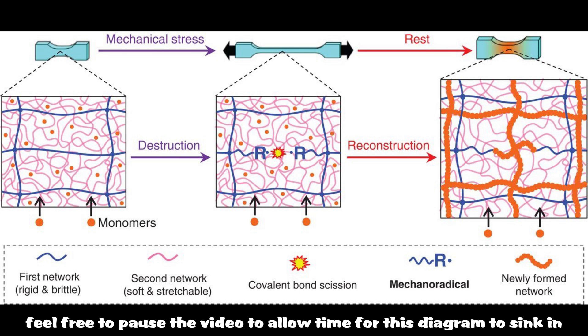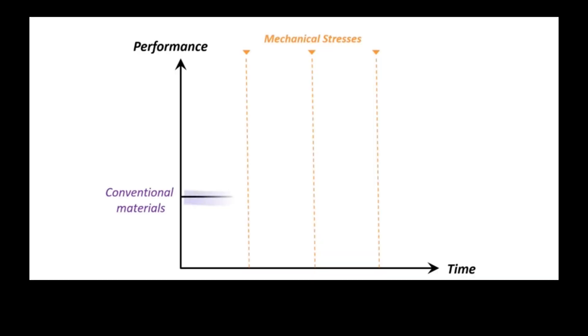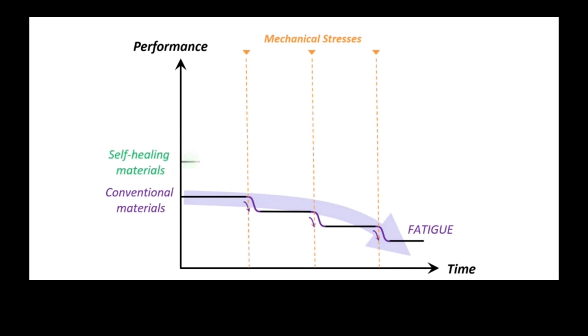These mechanoradicals can react with monomers in a solution in which the hydrogel is submerged, reforming the rigid network, only stronger. Self-healing materials have been heavily pursued. In self-healing materials, the goal is for the material to recover to its original state after being damaged, opposed to conventional materials which will become weaker over time.